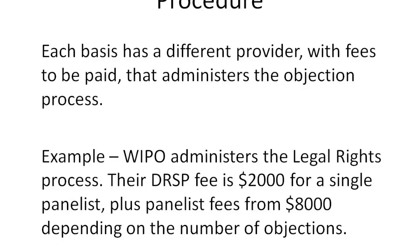Each filing basis has a different provider that administers the objection process, with fees to be paid. For example, WIPO would administer the legal rights process. They have a sliding fee scheme, with their lowest at $2,000 for a single panelist, and additional panelist fees depending on the number of objections. The lowest possible total is $8,000, so you could easily be at $10,000 trying to make a legal rights objection. And of course, there are also fees for the respondent if they want to defend.